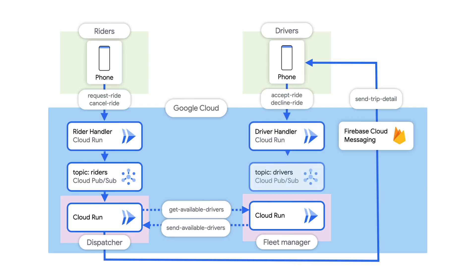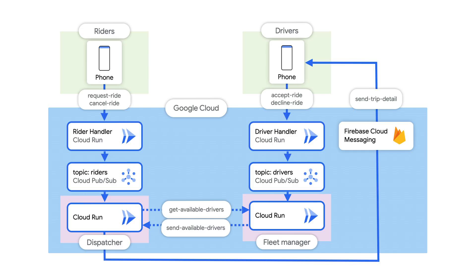When a driver accepts or declines a ride, their mobile app calls a Cloud Run service called Driver Handler. That service publishes a message to PubSub, which is consumed by the Fleet Manager service. PubSub lets me decouple Rider Handler from Dispatcher and Driver Handler from Fleet Manager. It also lets me add more message subscribers in the future, for example for reporting. Thank you for showing me how the app works. I see how PubSub fits in now.